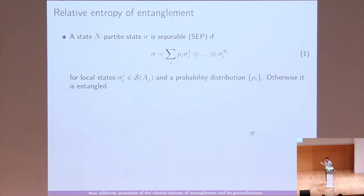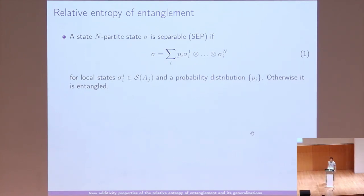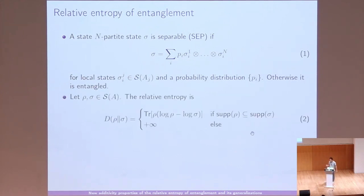I start with some definitions. A separable state — as I'm sure all of you know — is just a mixture with some probability p_i of tensor products of local states. This is an n-partite separable state. If a state is not separable, then we call it entangled, and this will be the main focus of this talk.